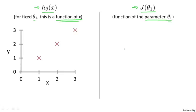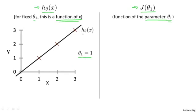Let's plot these functions and try to understand them both better. Starting with the hypothesis: on the left, here's my training set with three points at (1,1), (2,2), and (3,3). When I'm plotting my hypothesis function, the horizontal axis is labeled x — the size of the house.